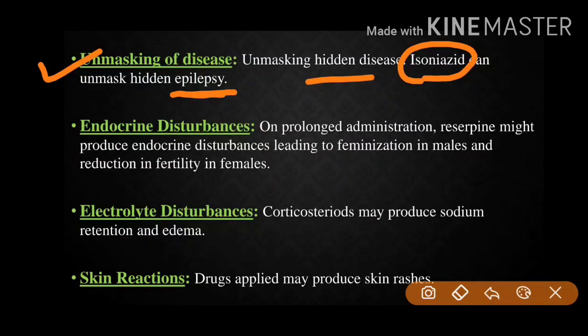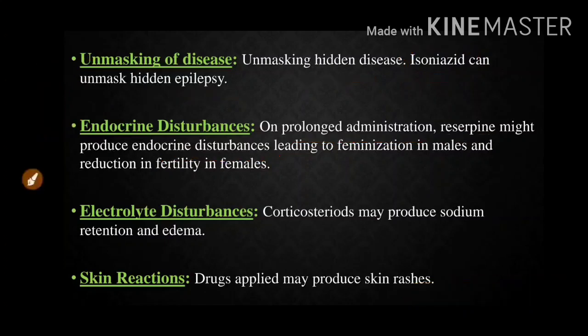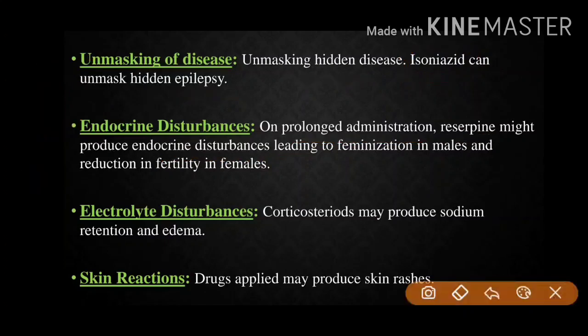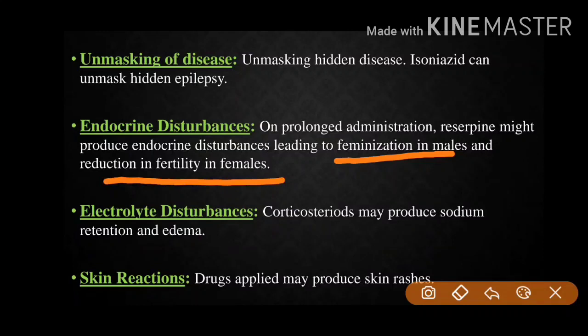Next is endocrine disturbances on prolonged administration. If we are taking a drug for a long time — for example, reserpine — it might produce endocrine disturbances. It can lead to feminization in males and a reduction in fertility in females. Males can show female-like characteristics, and females can lose their fertility. This is about endocrine disturbance.